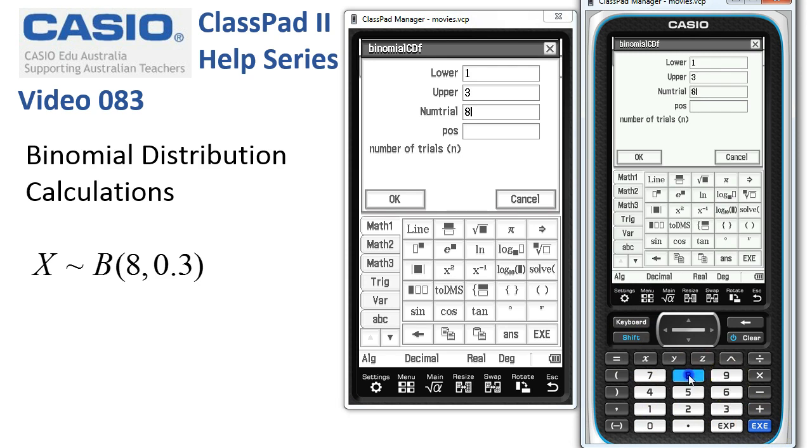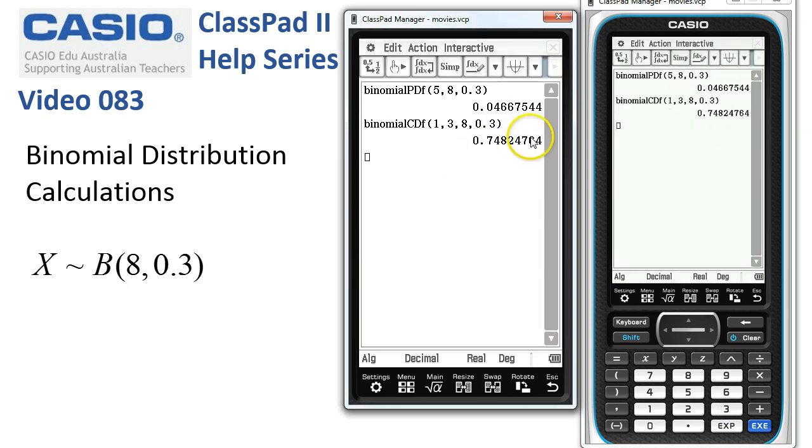The number of trials is eight, and the probability of success is 0.3. And when I tap OK, then there's the probability of getting between one and three successes on that one. We could also calculate this in statistics and that's explained in another video.